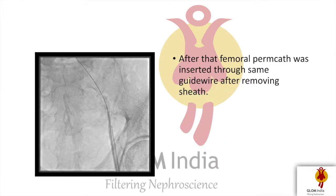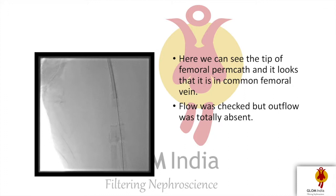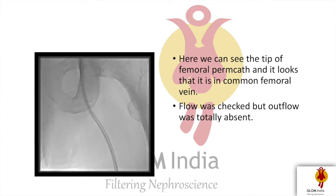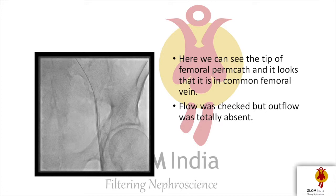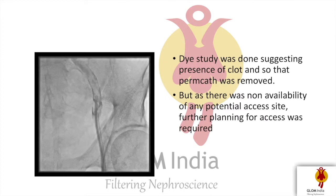After that confirmation, a femoral tunneled catheter was inserted through the same guide wire after removing the sheath. Here we can see the tip of the femoral tunneled catheter in the common femoral vein. Flow was checked, but again the same situation — outflow was totally absent. A dye study was done and there was presence of clot near the tip of the catheter. As flow was not available, the catheter was removed.